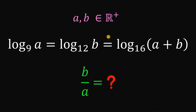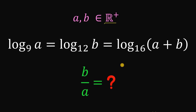Can you solve this math challenge? Here's the question. Given that A and B are both positive real numbers, and A and B satisfy this equation: logarithm of A to the base of 9 equals logarithm of B to the base of 12 equals logarithm of A plus B to the base of 16. What is the numerical value of B over A?